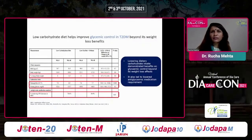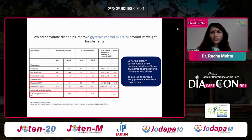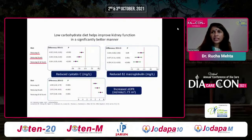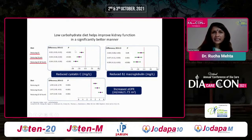Lowering carbohydrate intake shows clear glycemic benefits. When combining a low-carbohydrate diet with low glycemic index foods, there is significant improvement not only in blood glucose but also in kidney function markers including GFR.